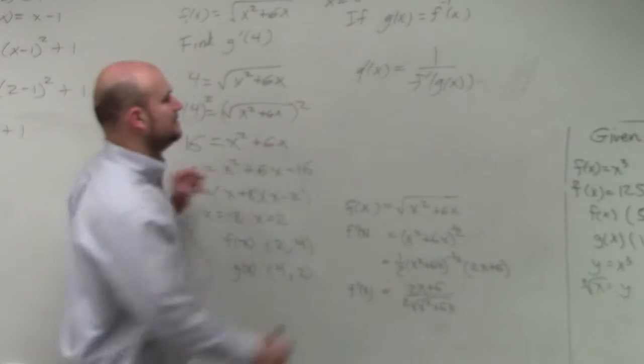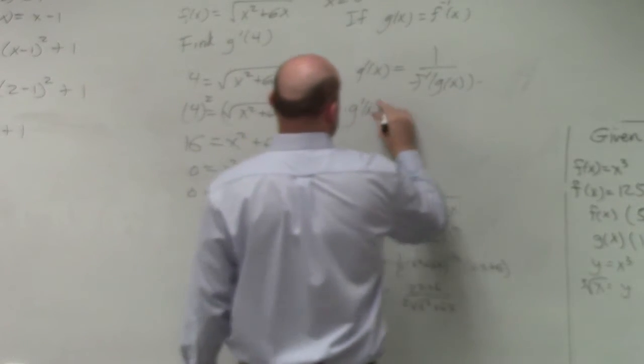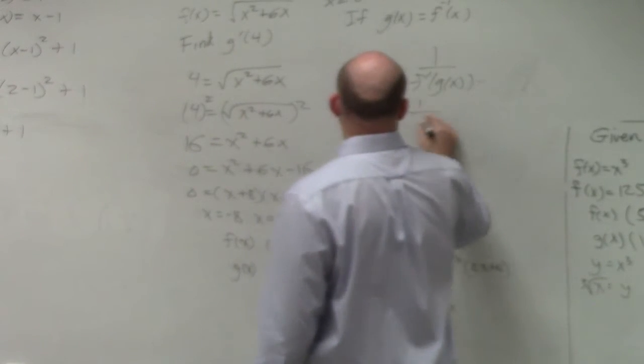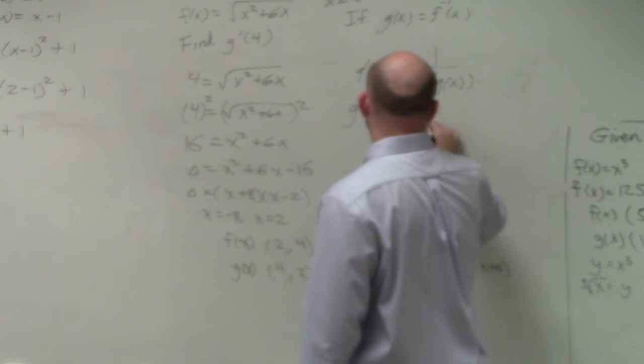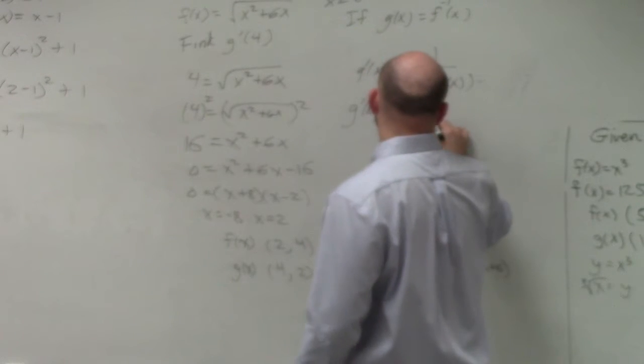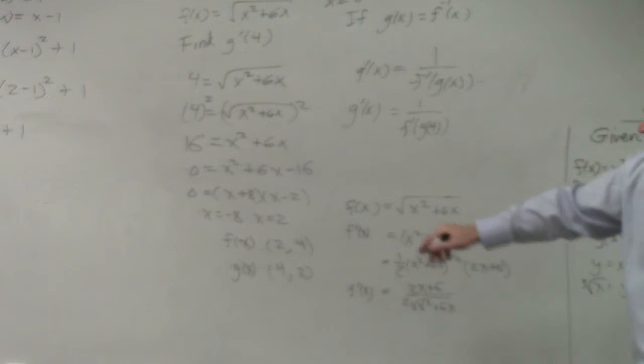So now, following this, I have g prime of x equals 1 over f prime of g of 4. Well, I know what g of 4 is.